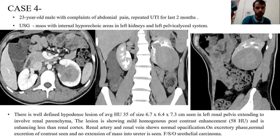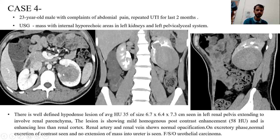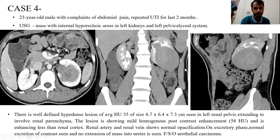Case 4: A 23-year-old male with complaints of abdominal pain and repeated UTIs for the last two months. Ultrasound showed a mass with internal hyperechoic areas in the left kidney and left collecting system. On axial, coronal, and sagittal CT abdomen images, there is a mass in the region of the renal parenchyma extending into the pelvis. The mass is less enhancing than the renal parenchyma but still enhances by more than 20 HU. The collecting system is opacifying, and the ureters can be seen. There is no invasion of the ureters or adjacent vascular structures. This is a case of urothelial carcinoma.